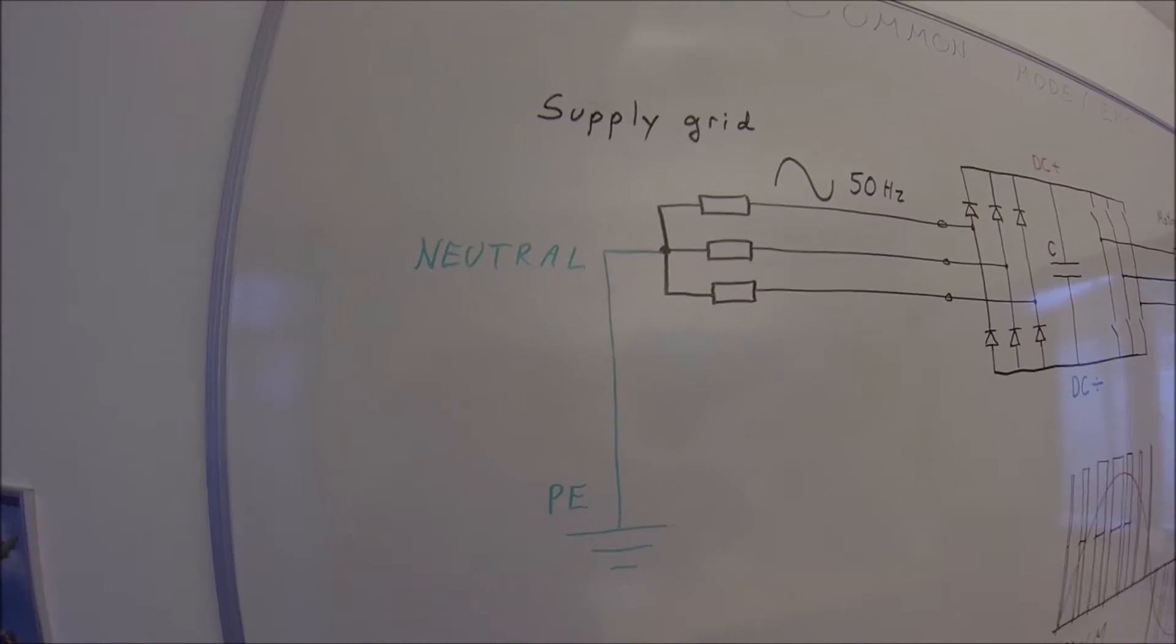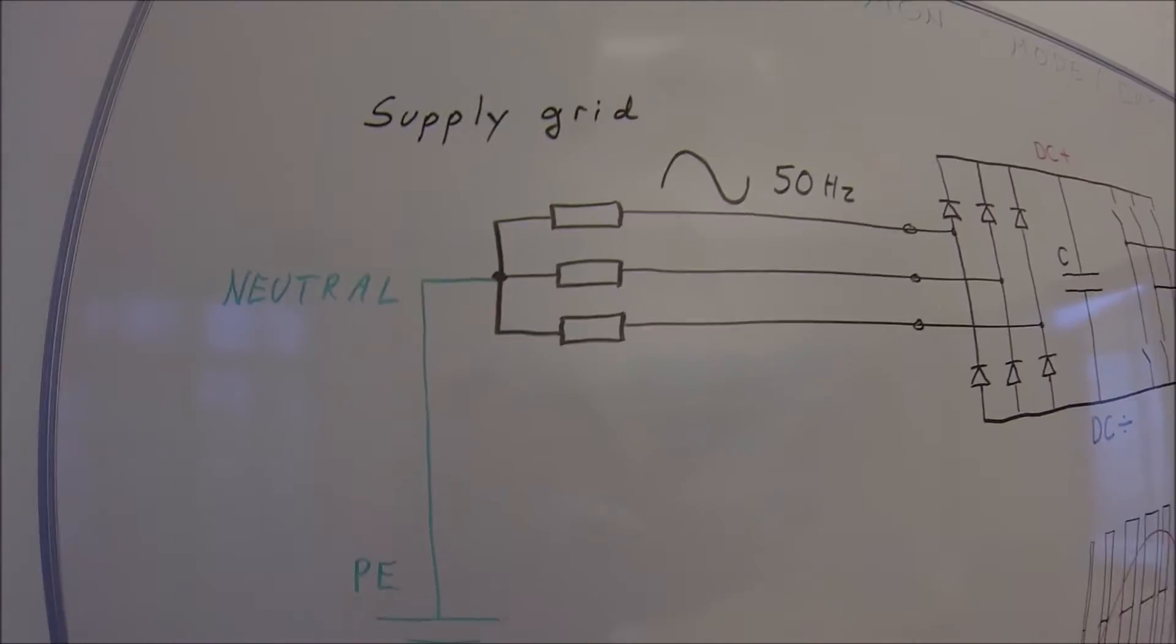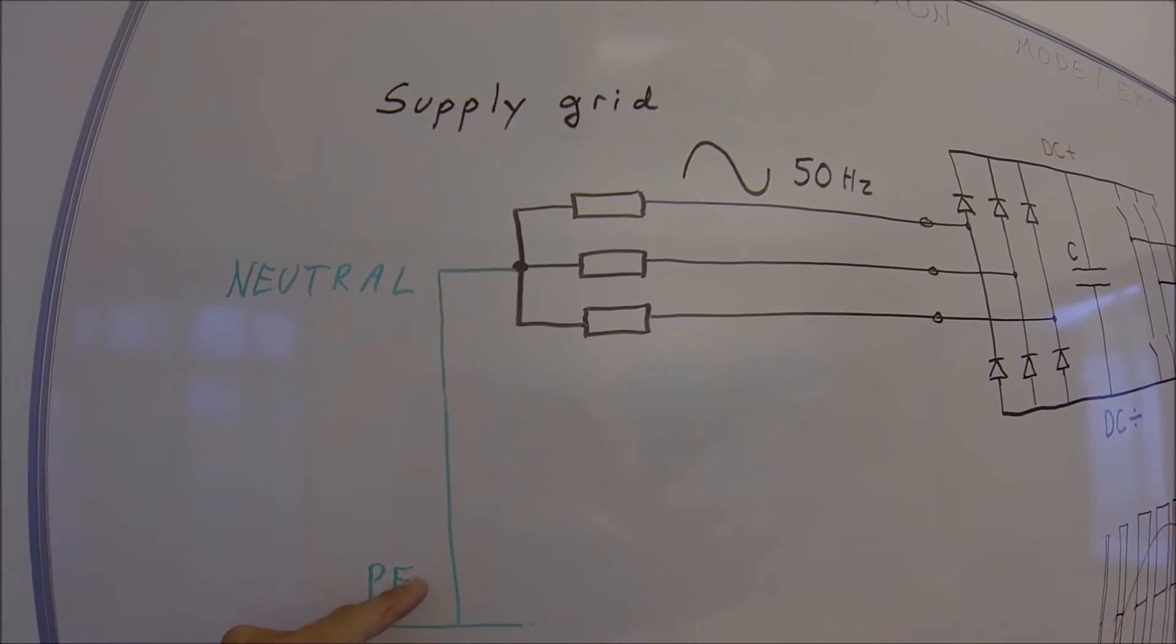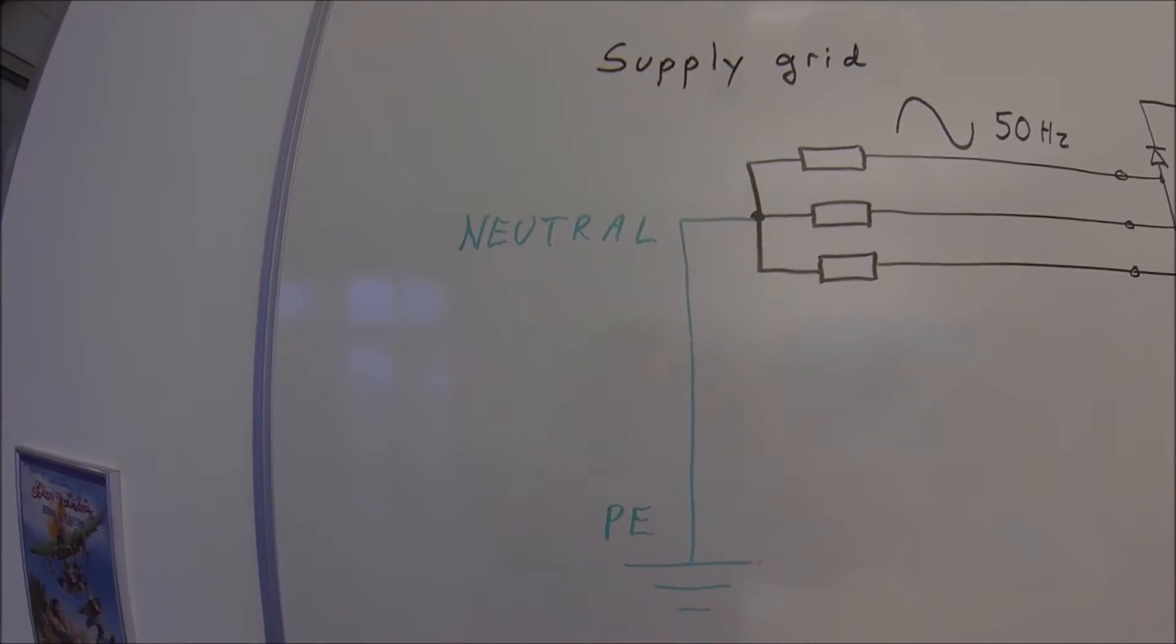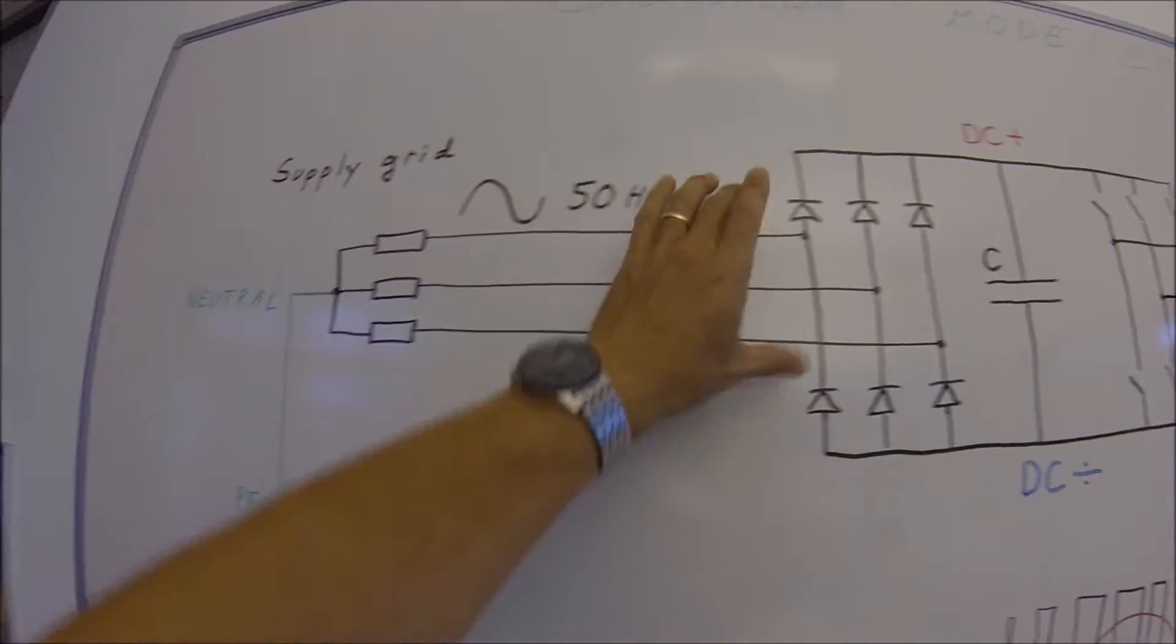The incoming supply to a frequency converter is in balance. The three phases coming in have a neutral point which is zero. So the sum of these are in total balance zero.